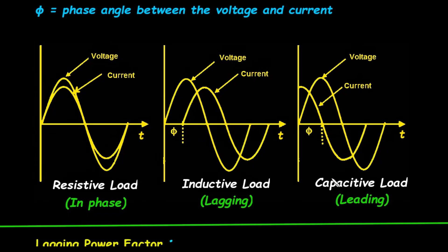Finally, we have the capacitive load. Here, the situation is reversed. The current waveform is shifted to the left of the voltage waveform. This means the current reaches its peak value before the voltage does. In this case, we say the current leads the voltage. This condition is known as a leading power factor.